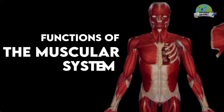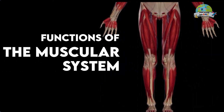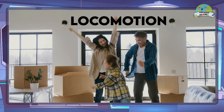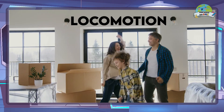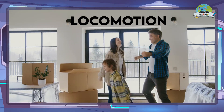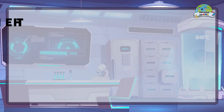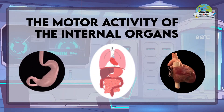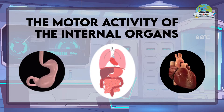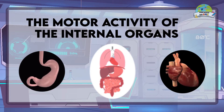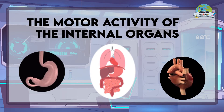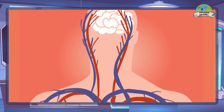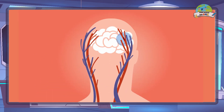Functions of the muscular system. Locomotion — it is the displacement of the blood and movement of the extremities. The motor activity of the internal organs: the muscular system is in charge of making all of our organs perform their functions, helping other systems such as the cardiovascular system.